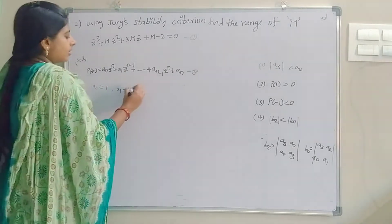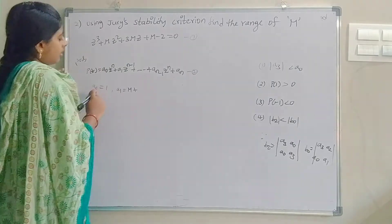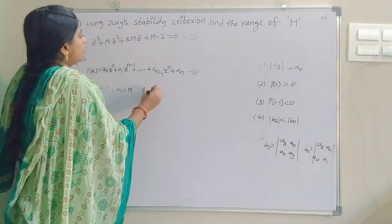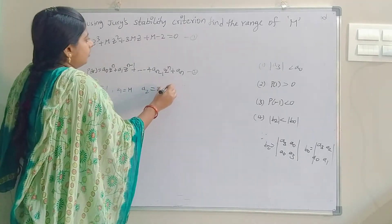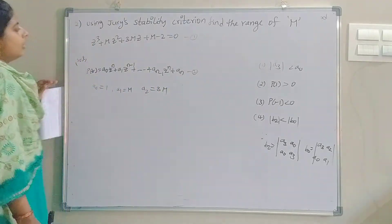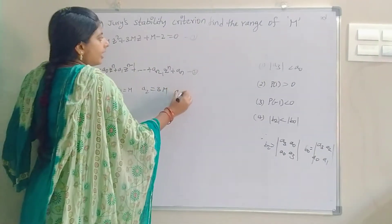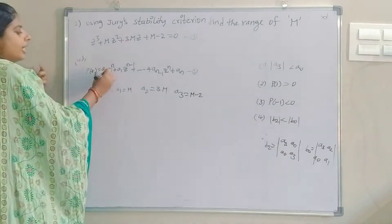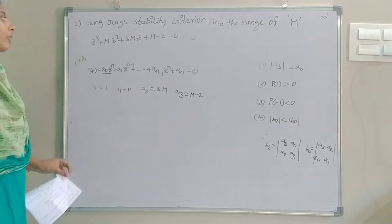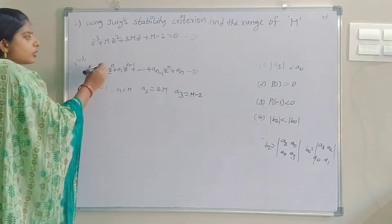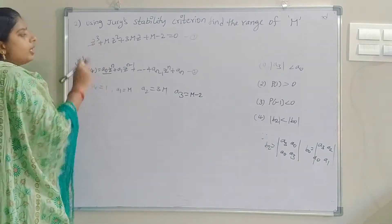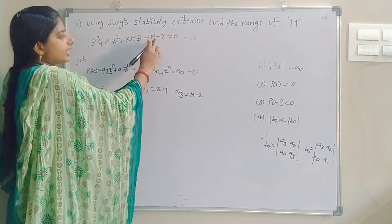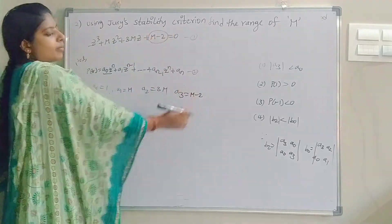Comparing the given equation with the general form: a₀ = 1, a₁ = m, a₂ = 3m, and a₃ = m − 2 (the constant term).